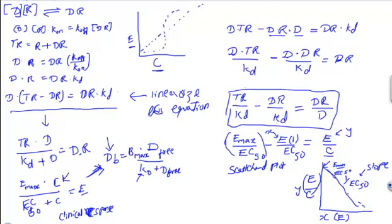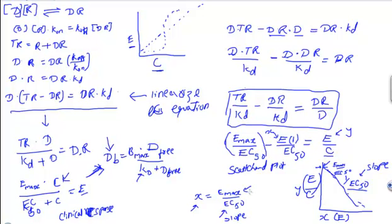The information available is effect and concentration. From the available data we can find the slope, and therefore EC50. From the y-intercept — which equals Emax over EC50 — since we know EC50 from the slope, we can find Emax. This same format applies whether it is for protein binding, clinical response, or any other Michaelis-Menten type equation.